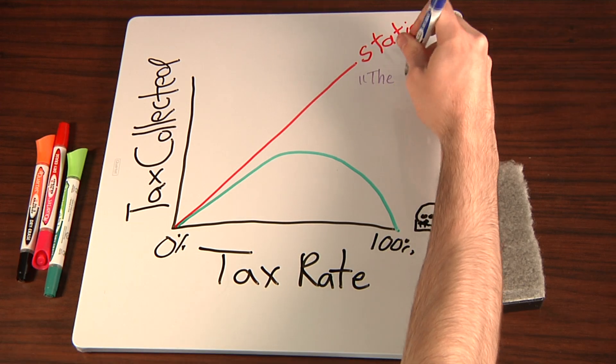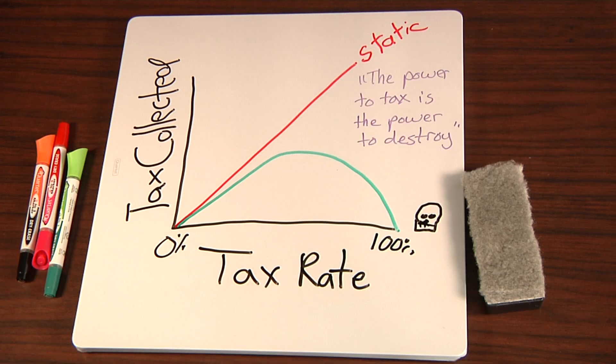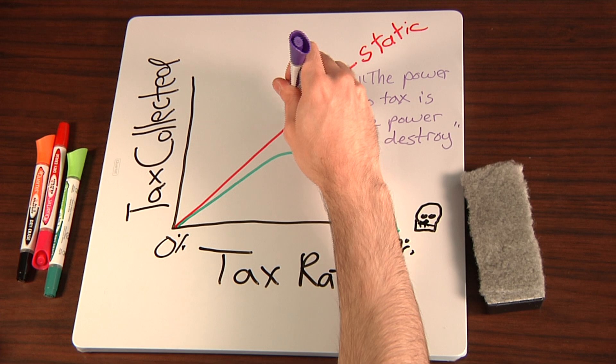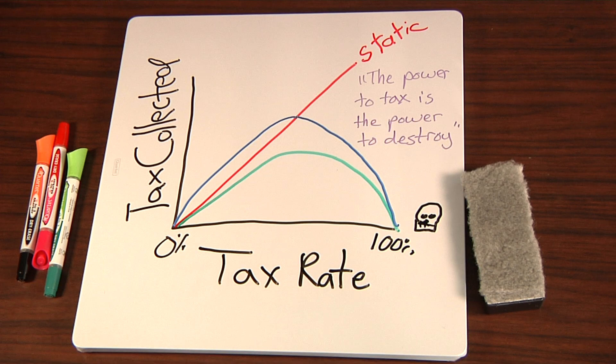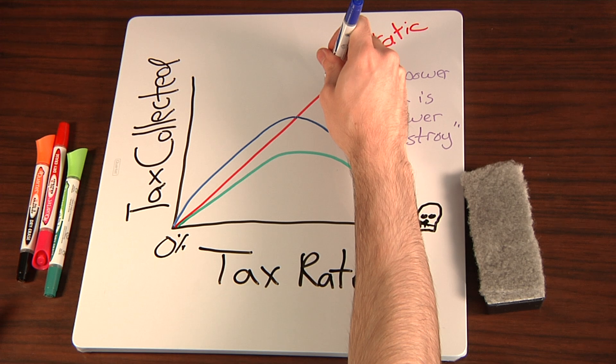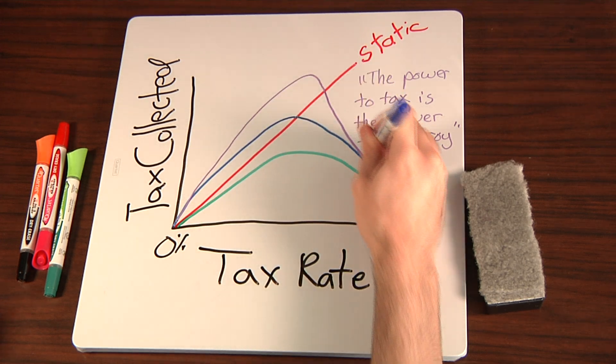And there's also the truism that things can be taxed to death. Or what if you already have a tax in place? If you tax something less, you'll get more of it. You might even get so much more of it that you take in more tax, a tax cut that pays for itself.